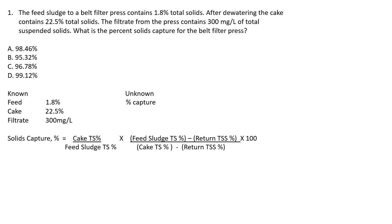We already have the feed percent and cake percent, but we need to convert the filtrate from 300 milligrams per liter to a percent. Remember: for belt filter press calculations, 1% equals 10,000 milligrams per liter. So we do 300 mg/L times 1% over 10,000 mg/L. The milligrams per liter cancel out, giving us 0.03%.